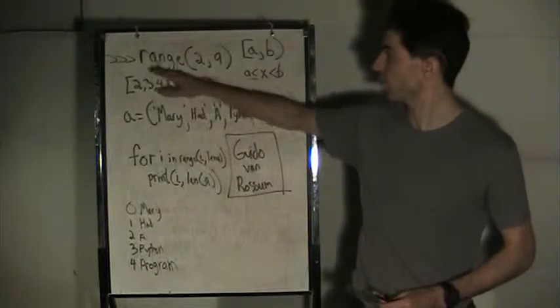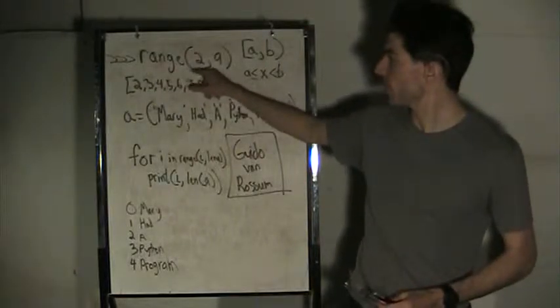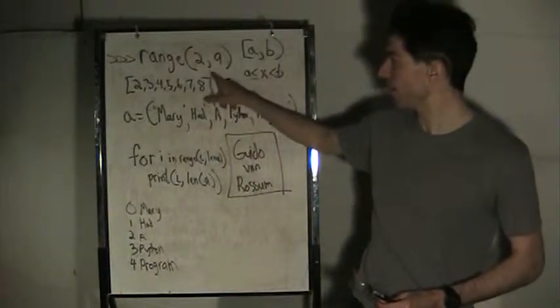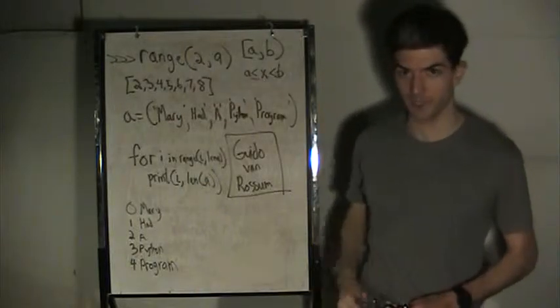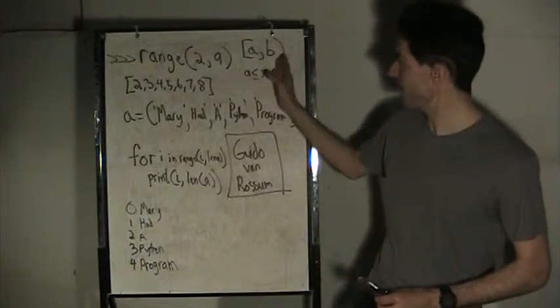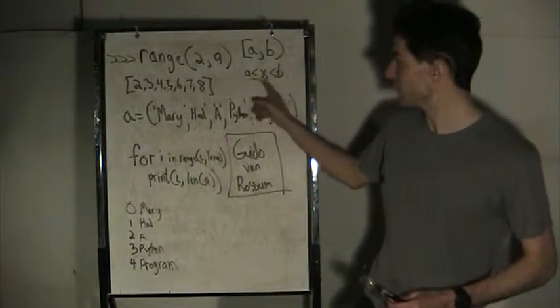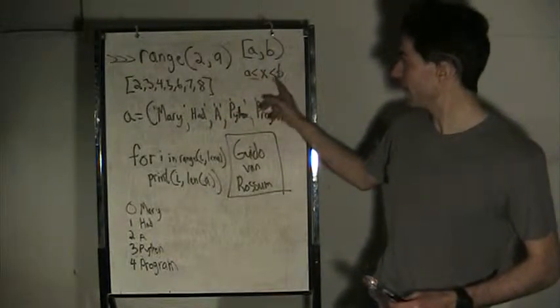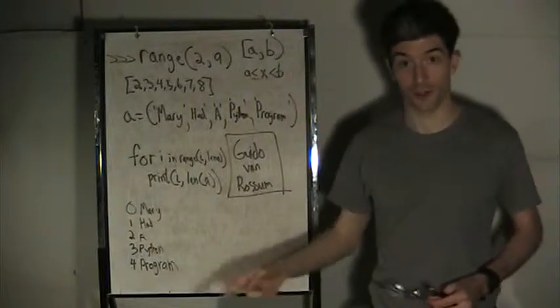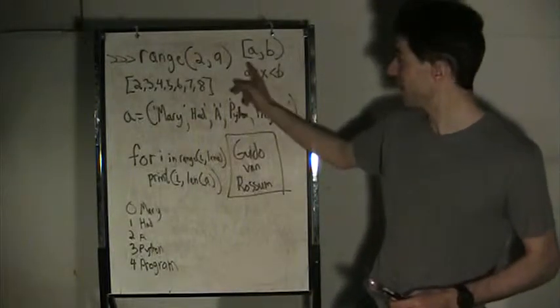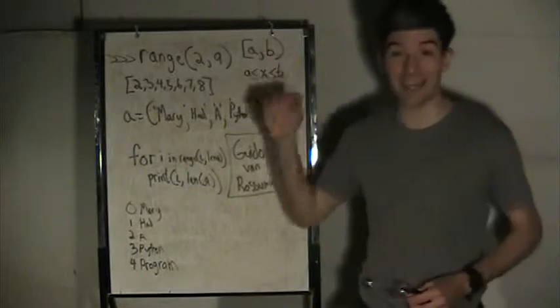Range function goes range, open parentheses, A, comma, B, end parentheses. Now what does the A, B mean? Mathematically, it simply means this: A is less than or equal to x, and less than B for integers, for all integers. So that means that the A value is inclusive.